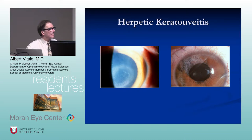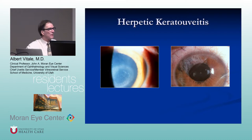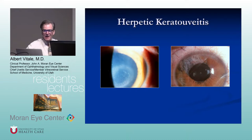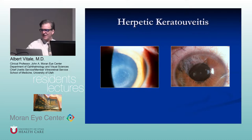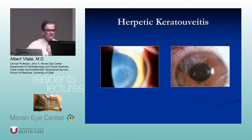Herpetic anterior uveitis — these are classic signs. On the right is an immune stromal reaction, kind of like an octopus pattern. On the right is sectoral iris atrophy. True or false: sectoral iris atrophy is pathognomonic of varicella zoster keratouveitis. False.